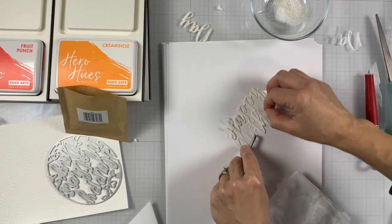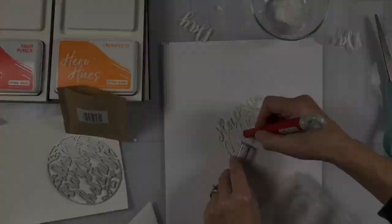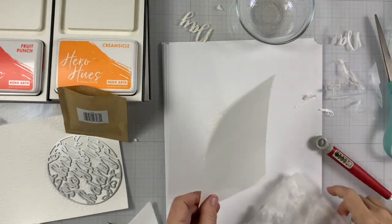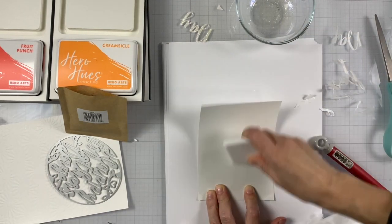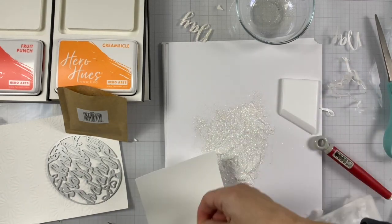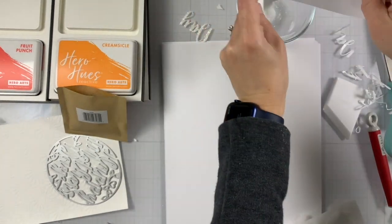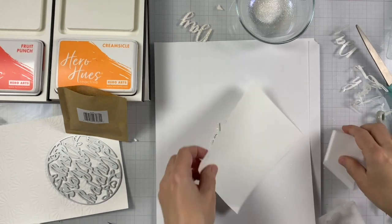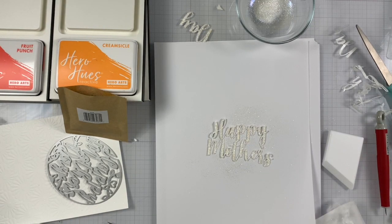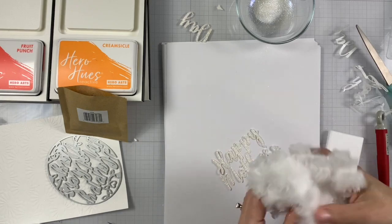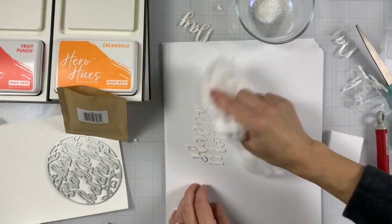Now I'm using a Swiffer cloth to kind of remove the excess glitter that was left over. So I'll repeat the same process on the other die-cut that says Happy Mother's. I just saved that leftover glitter from the first die-cut in a little glass container and I poured the same glitter on top of this die-cut too. And I'm repeating the same process, kind of burnishing that on top to make sure that all glitter is nice and secure. And now removing the excess with a Swiffer cloth.